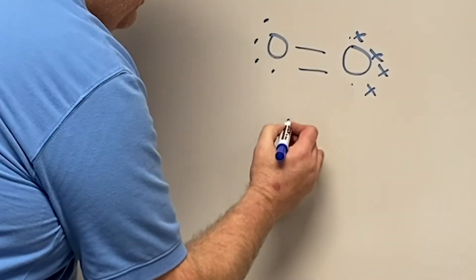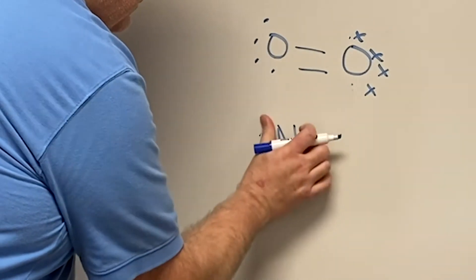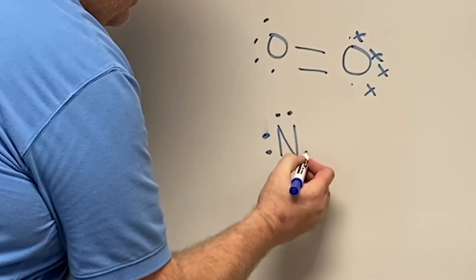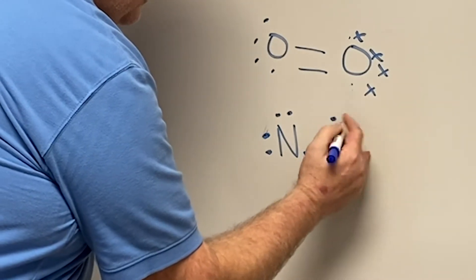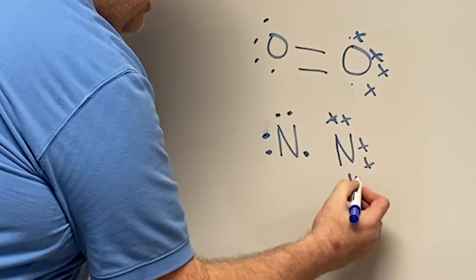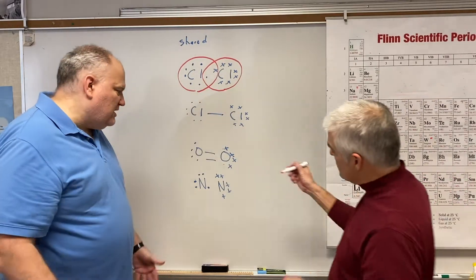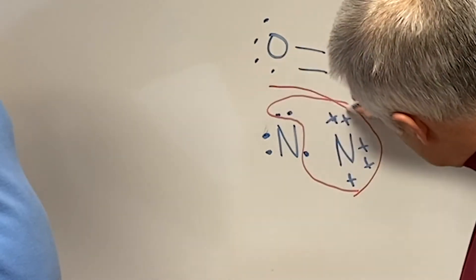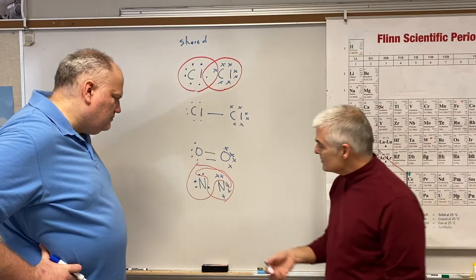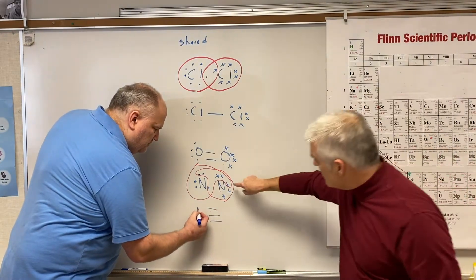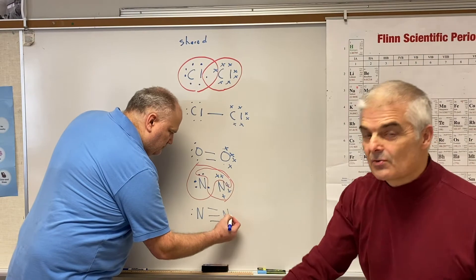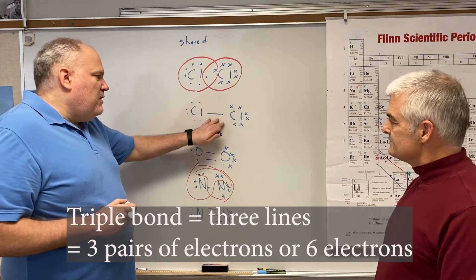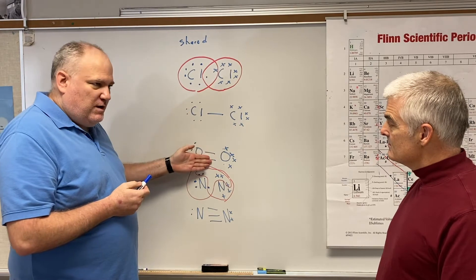Now let's do nitrogen. Nitrogen is even worse off — it's in column 15 and only has five valence electrons, so it needs three more. If you put two nitrogens together, they can share three pairs of electrons. In the intersection there are six electrons — three pairs — and this is what we call a triple bond. There's no such thing as a quadruple bond. Single bonds are predominantly weaker than double bonds, which are weaker than triple bonds.